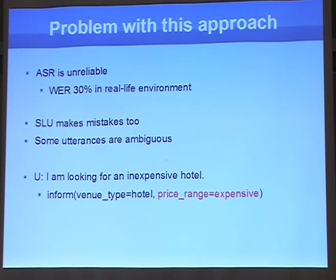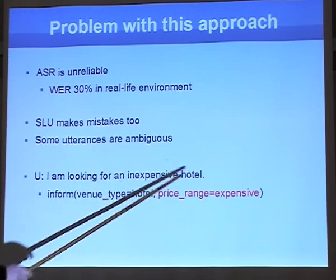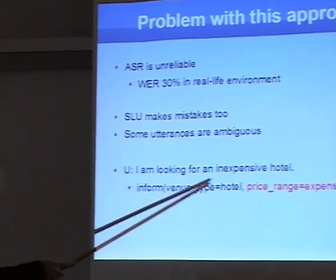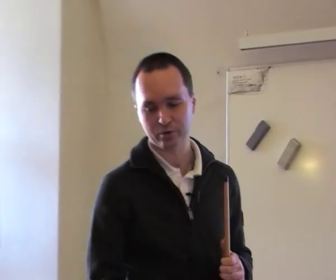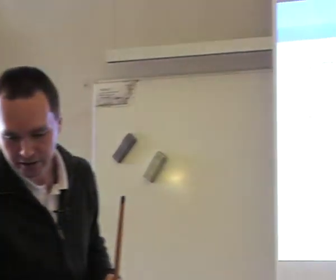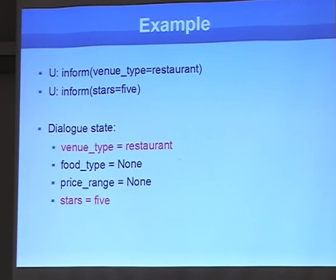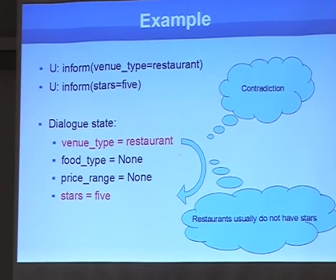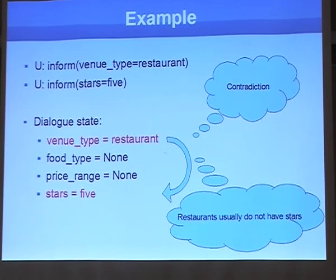Here is an example of an error that can happen — likely originating in ASR. The user says 'I am looking for an expensive hotel,' but we infer they are looking for an inexpensive hotel. Another example: the user says they are looking for a restaurant, we update the dialogue state, and then the user says 'inform stars 5' — but restaurants don't have stars, creating a contradiction. This is what happens when we accept incorrect input.